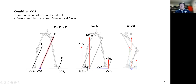With a 75 percent force and this distance serving as the moment arm about the center of pressure, essentially this is the balance point of the two forces in terms of torque generation. The combined center pressure is determined by the ratio of the vertical forces acting on the feet.